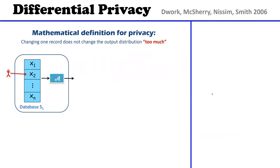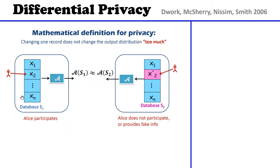Let me start with the definition of differential privacy. It's a mathematical definition for privacy. Let's think about a database that contains the information of individuals — every row contains the information of one individual — and we have an algorithm A that we want to apply to this database. Now let's think about modifying our database to what we call a neighboring database, where all rows remain exactly the same except that one row, let's say my row, is replaced with something completely different.